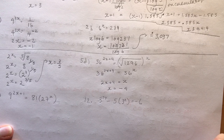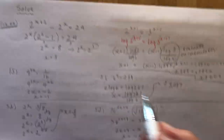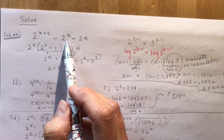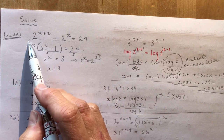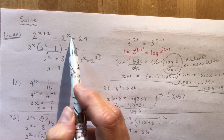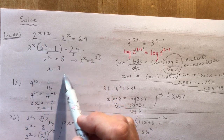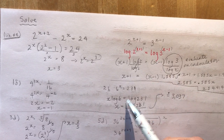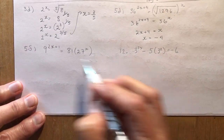Some of these aren't that hard. The tricky ones require factoring or taking the log. When you can write everything with the same base, equating exponents works perfectly and is much cleaner than taking logs. Watch out for when you actually need logs versus when you can solve purely using exponent rules.